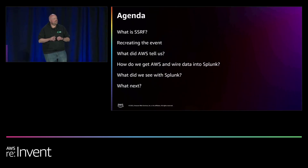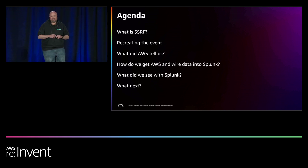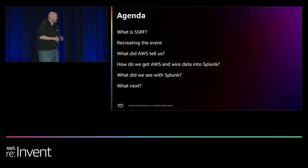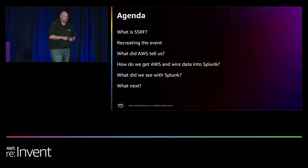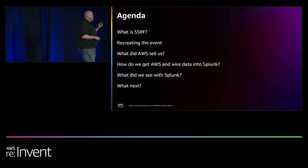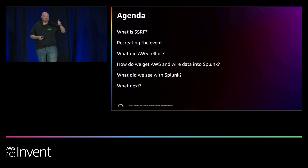We're going to go through what exactly is server-side request forgery, how I went through recreating this, what AWS specifically told us during this attack, how we get AWS data and other data into Splunk, and what we saw with Splunk that we didn't see with AWS — very important. And what's next for all of you. When I say 'event,' I mean an attack. AWS made me change that, but this is a server-side request forgery attack against a machine.